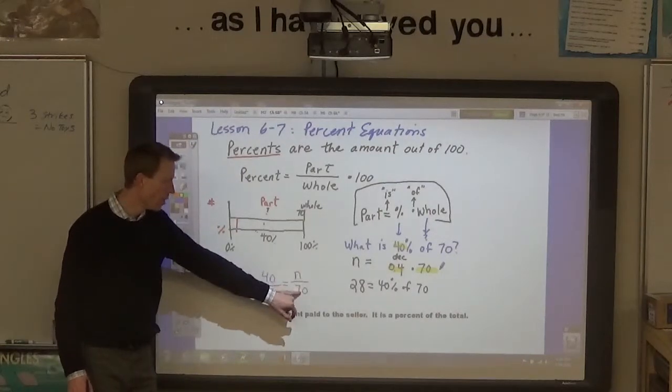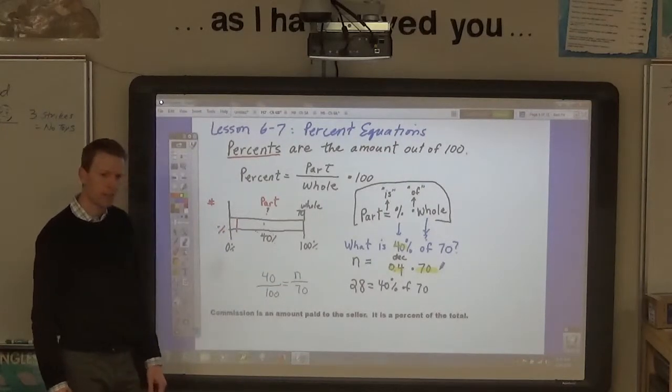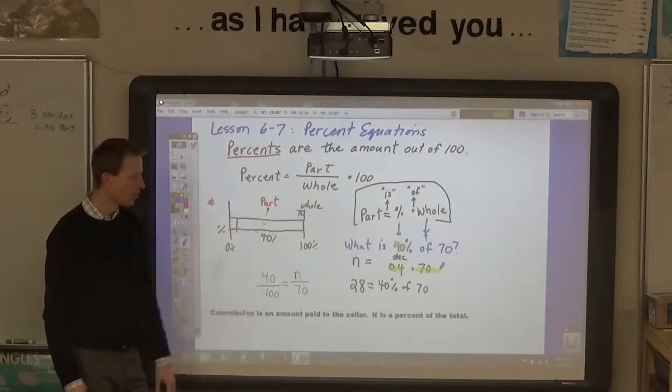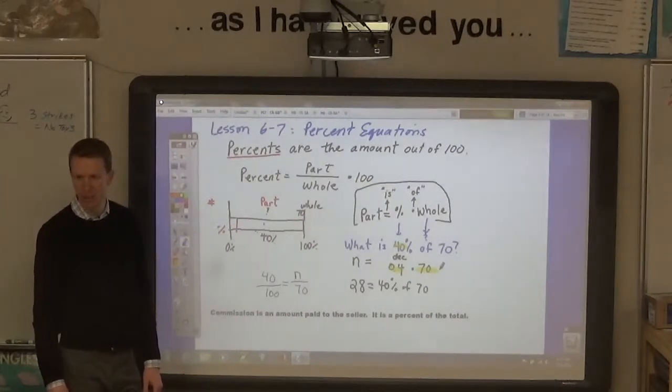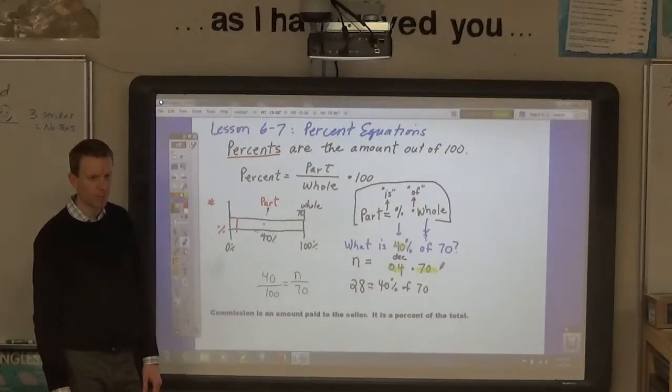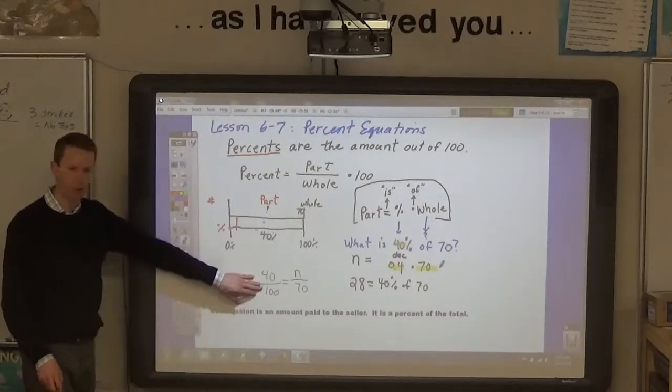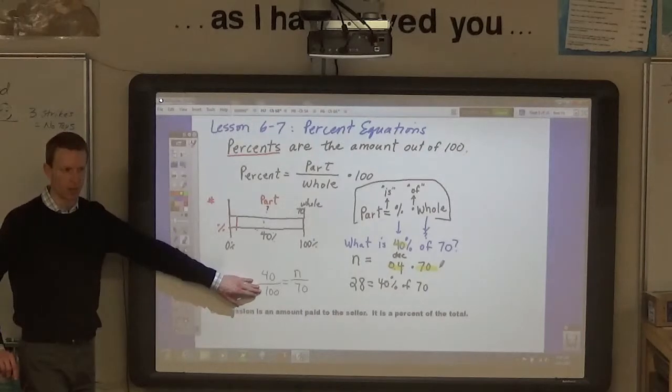part over the whole is equal to n over 70, and then cross multiply and divide, just like we did last time. So, you can always set up a proportion if you want to.